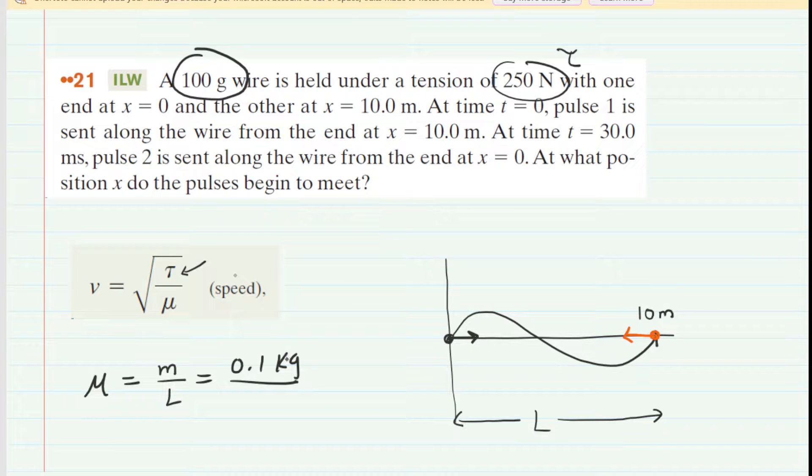divided by the length of the string. Once again, the length of the string is just 10 meters. We know that because that second pulse begins at the other end of the string, which is located at x is equal to 10 meters. So the actual length of the string is 10 meters. So we calculate that, and we would get 0.01 kilograms per meter. We're going to be plugging that value in for mu, and then the 250 newtons in for tau. And when we simplify that, we get a speed of approximately 158 meters per second.